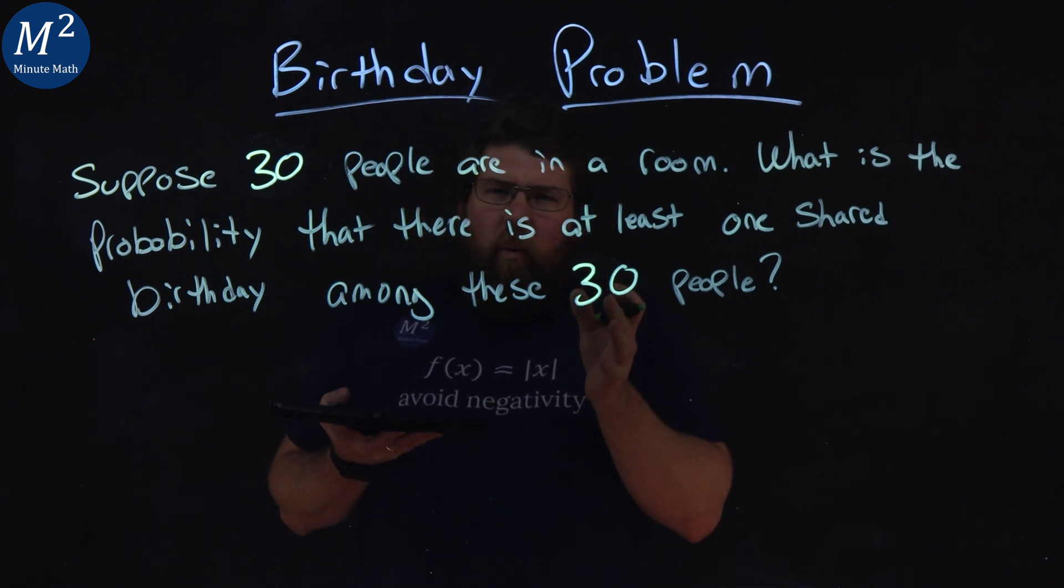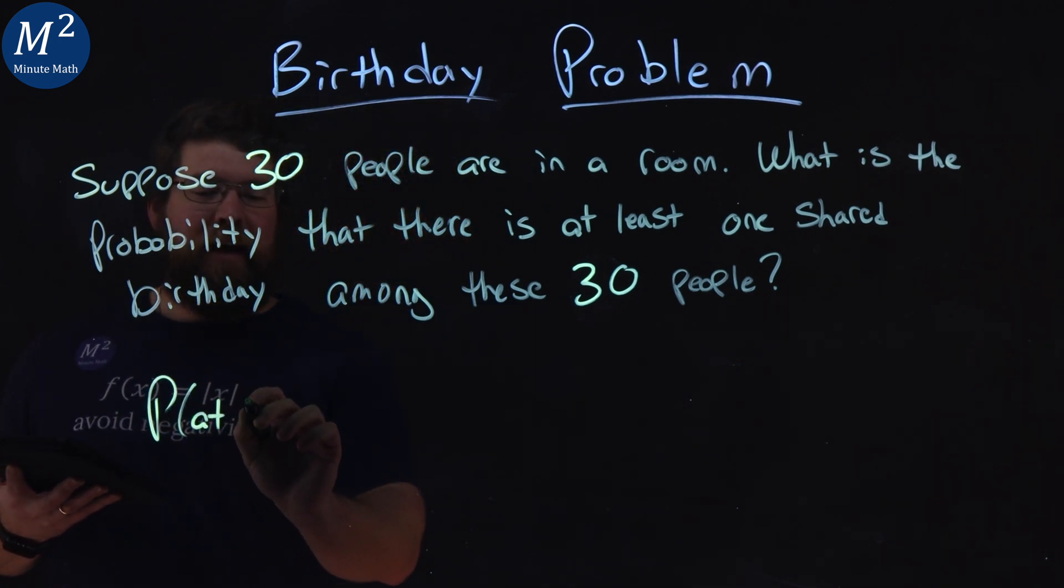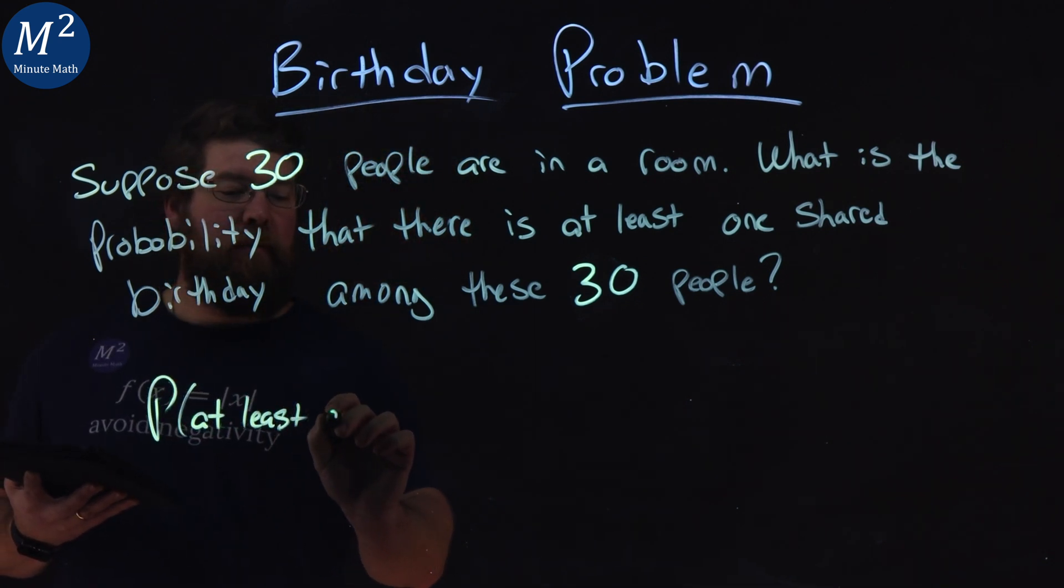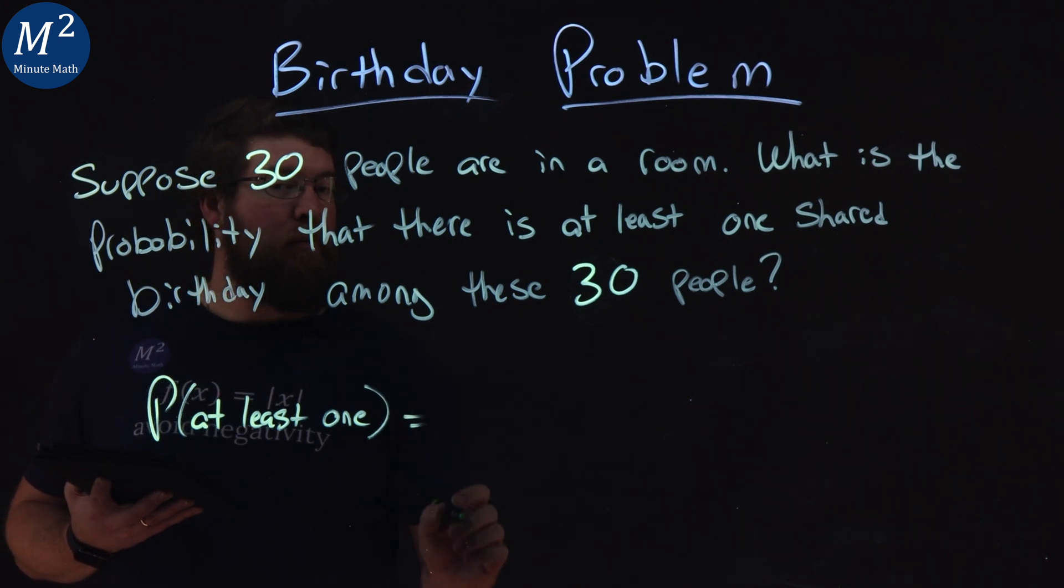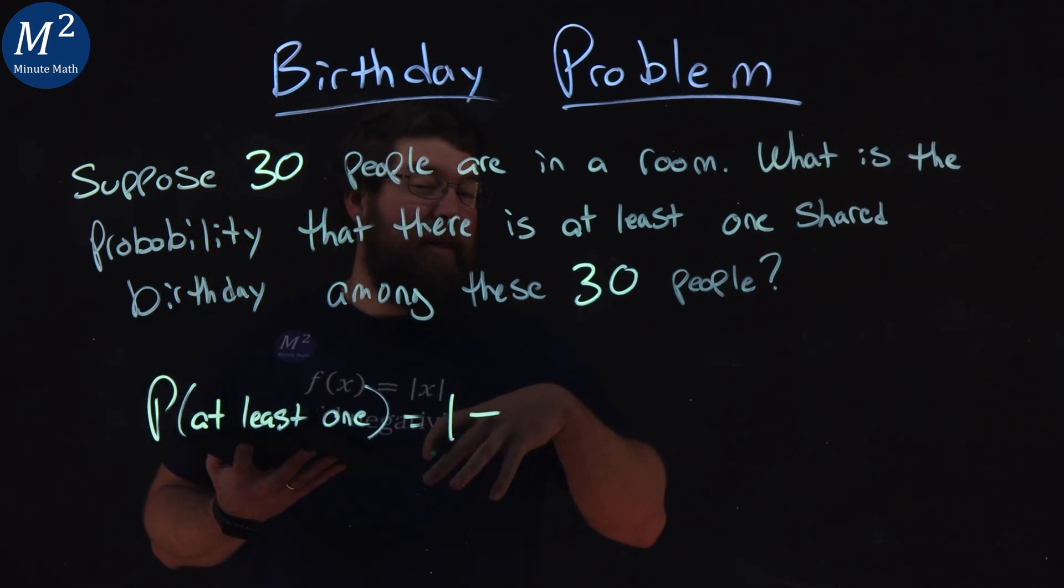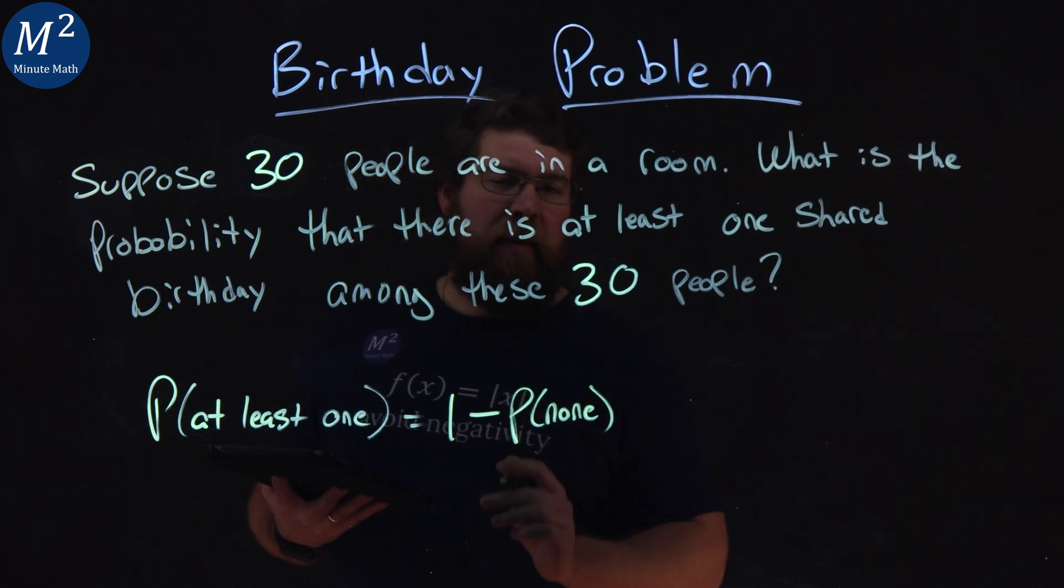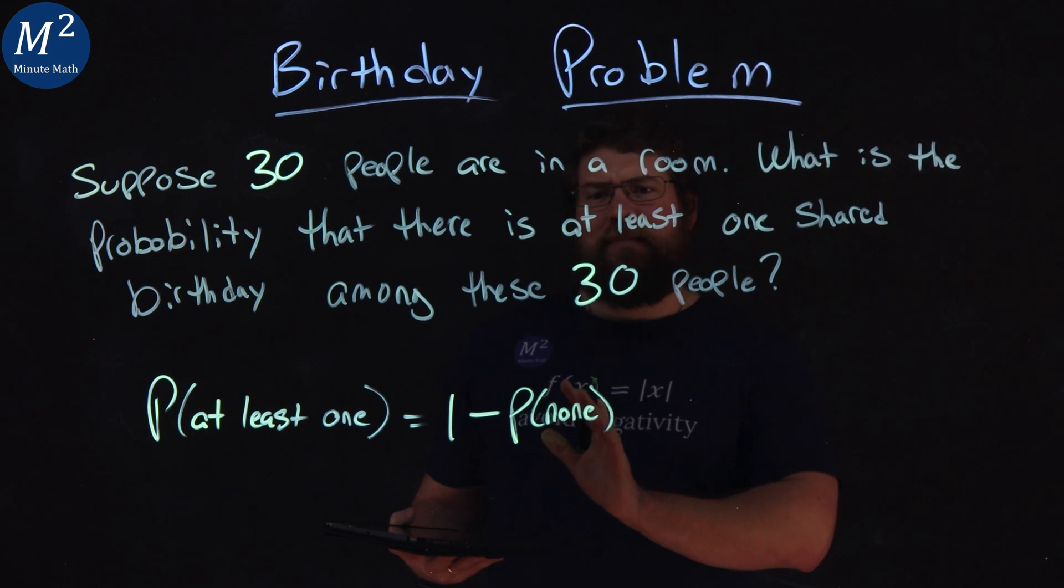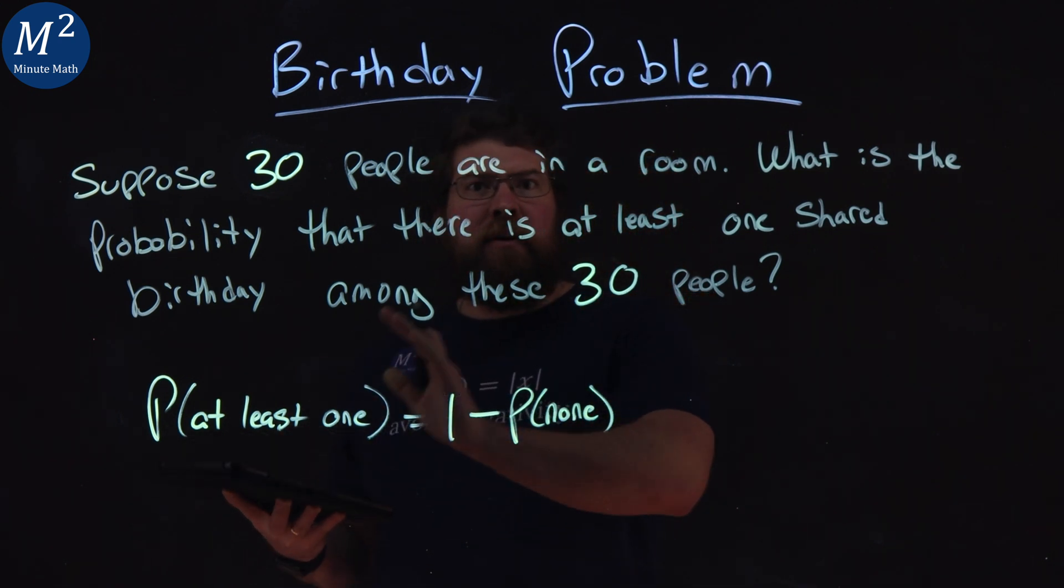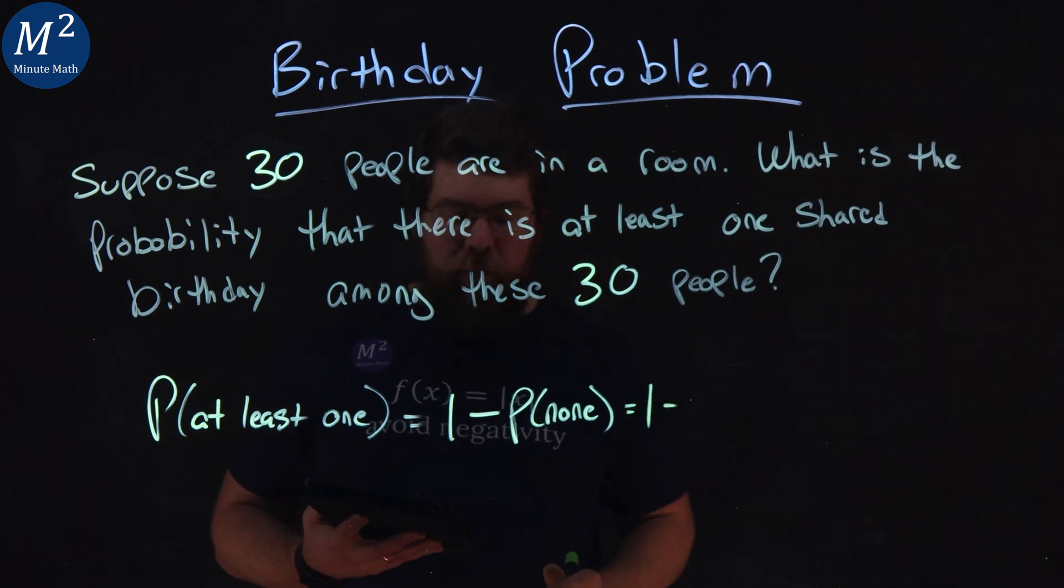Well, again, we're going to be dealing with the opposite. The probability of at least one is equal to one minus the probability that no one has a shared birthday. This is a common thing in mathematics where it becomes easier to find the opposite of what you're looking for and then do one minus that.